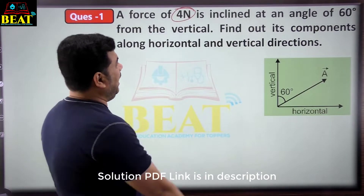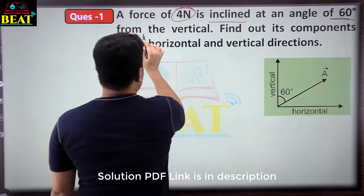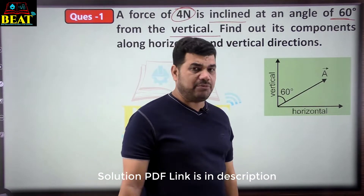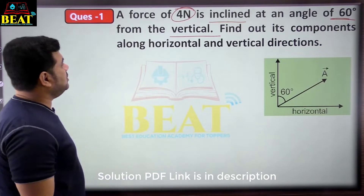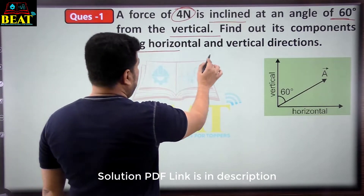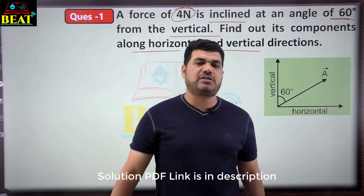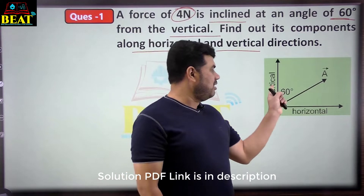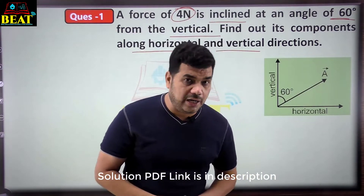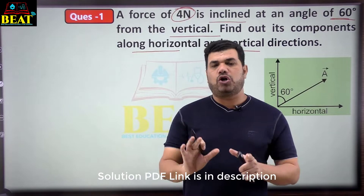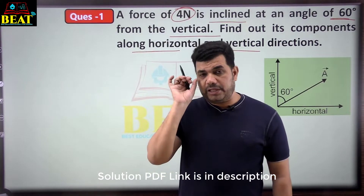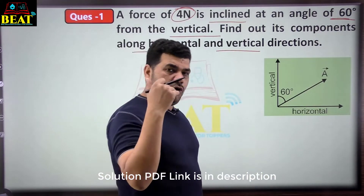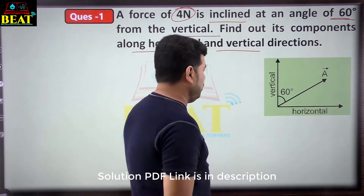As soon as it says that, draw a diagram — and here a diagram is given. The question asks: find out its component along horizontal and vertical. This is a basic vector question. But I have intentionally taken 60 degrees from the vertical, because some students memorize that horizontal means cos theta — but that is not always the case.